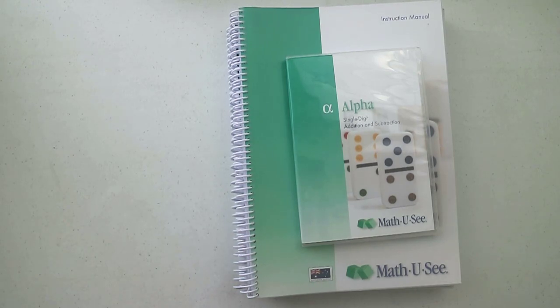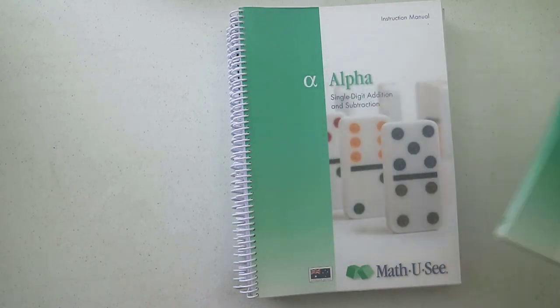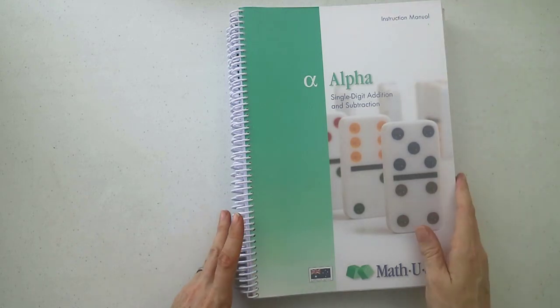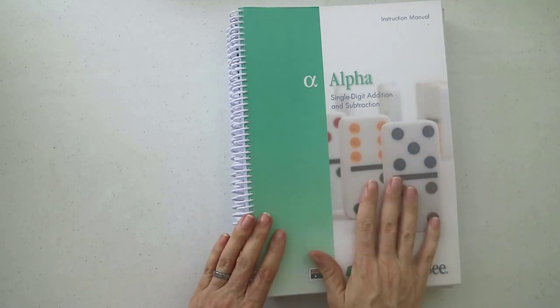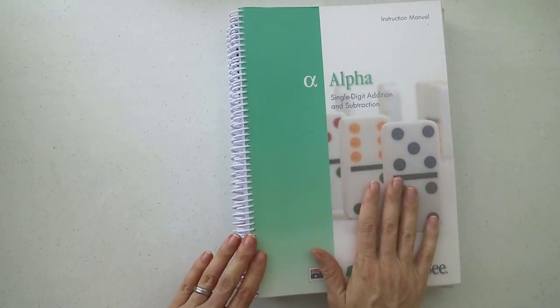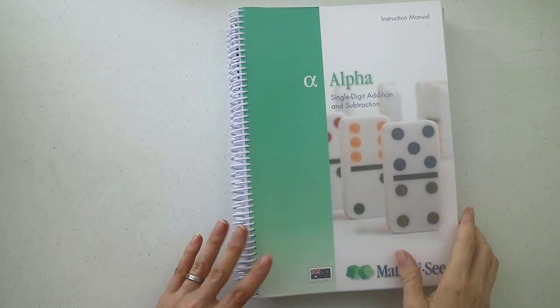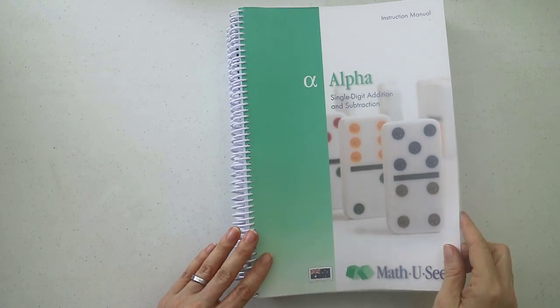These are really good if you're not confident in teaching and they make it really easy. It recommends that you watch the DVD lesson yourself and then teach it to your child, but we watch the lessons together and talk about it and do the same things with the blocks and pause it if we need to. I think that's what most homeschoolers do. Next up we have the instruction manual. These ones also have an extra plastic cover on them so they're a bit more long-lasting. These are the ones you'll use for multiple children or resell when you're finished with them.